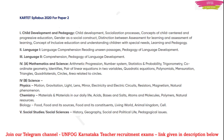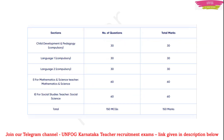Part 4 is for Maths and Science teachers, and the fifth part is for Social Studies teachers. This is how Paper 2 is divided. Child Development and Pedagogy: 30 questions, 30 marks. Language 1: 30 questions, 30 marks. Language 2: 30 questions, 30 marks.